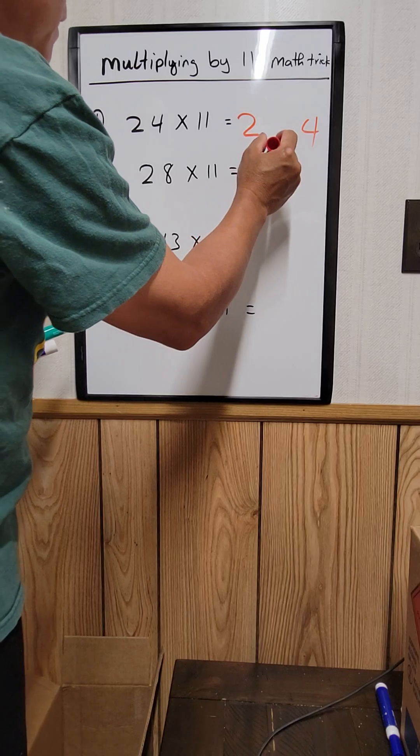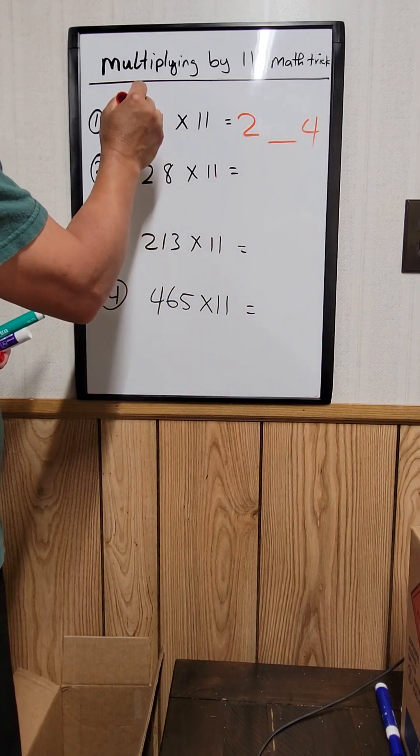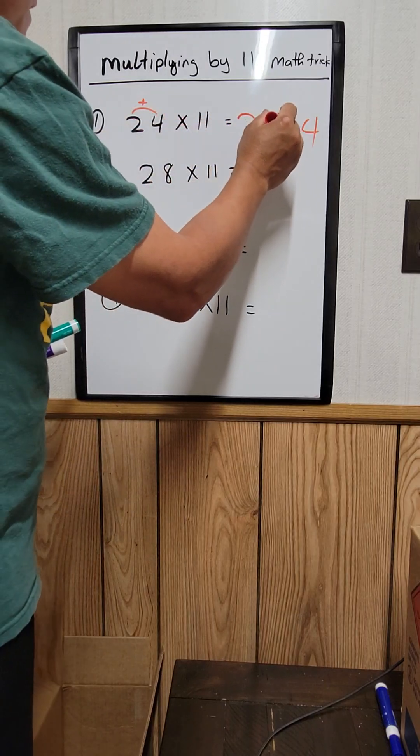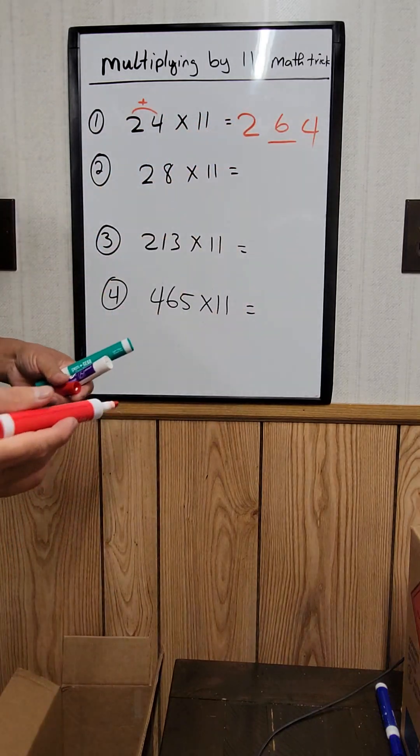24 times 11, all you need to do is just write the 2 and the 4 right here. So the middle number right here, this middle number, just add this 2 up right here. 2 plus 4 is 6. So your answer is 264. You see how fast it is?